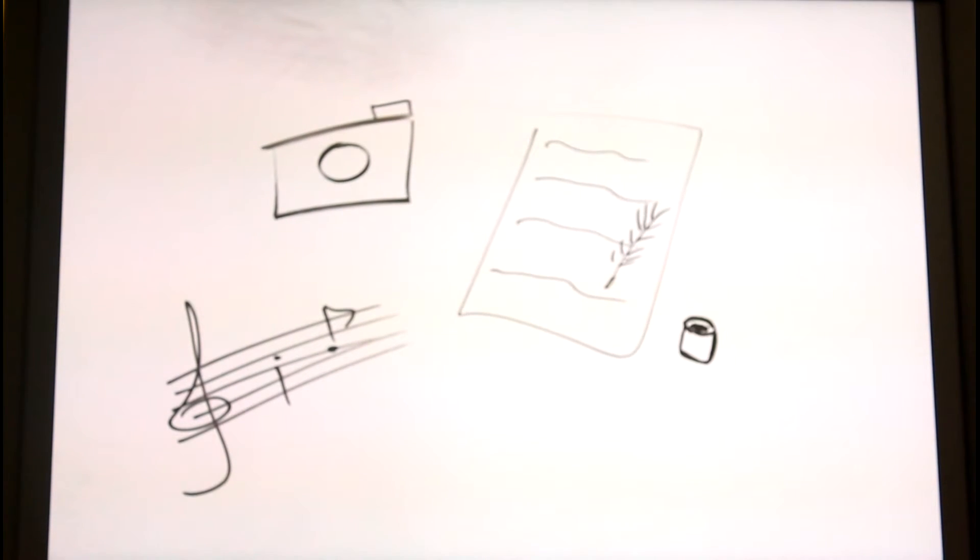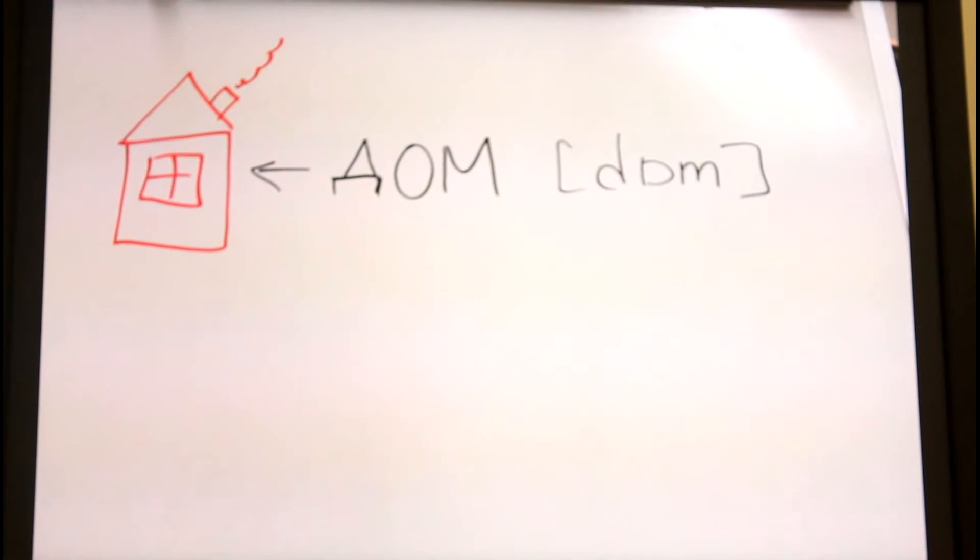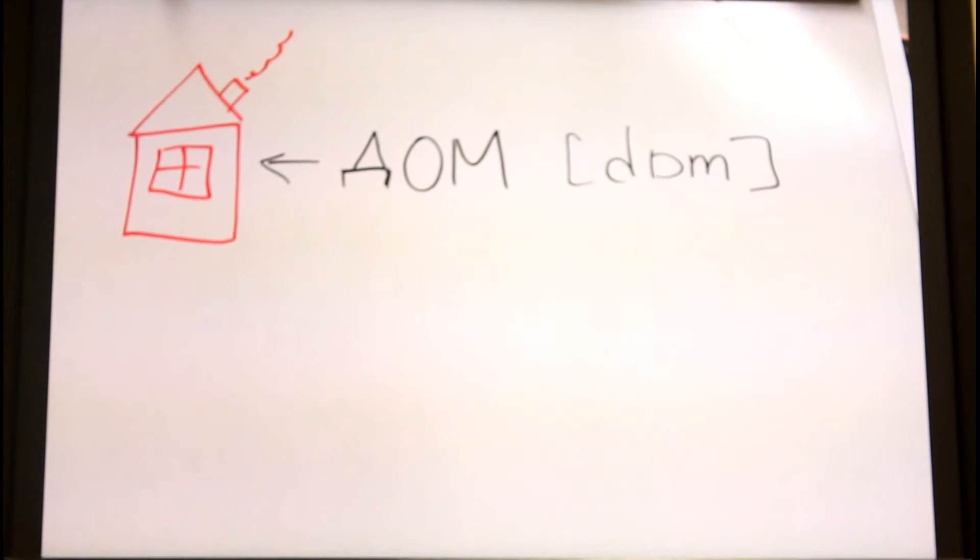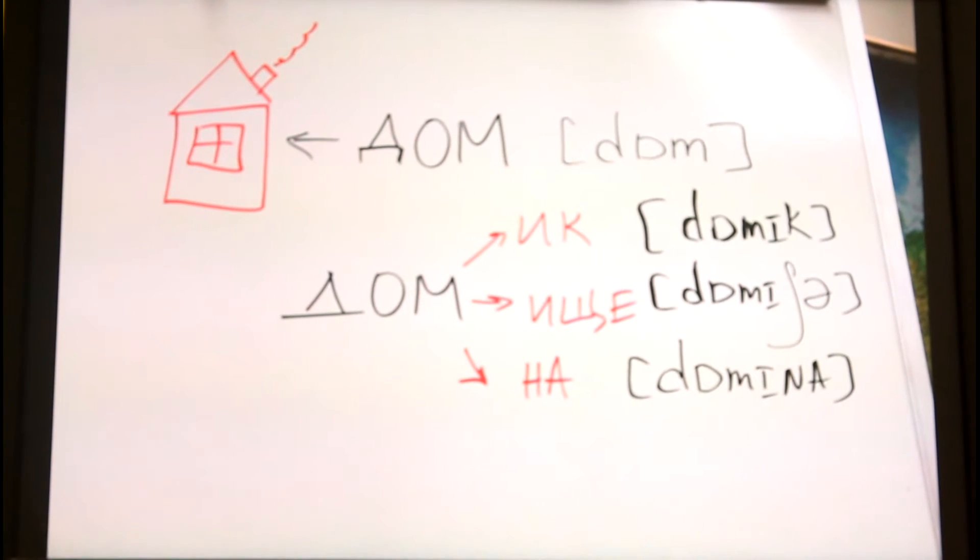For instance, let's take the word DOM, that means a house. These are the variants of this word: DOMIK, DOMISHCHE, DOMINA.